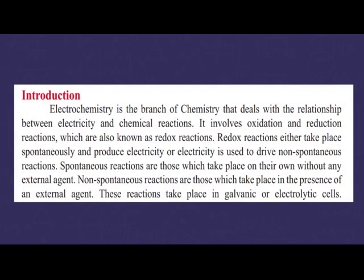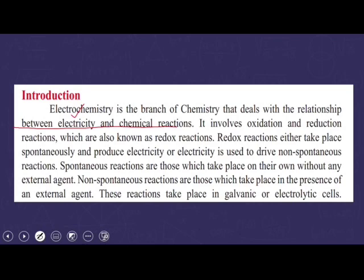Starting from the chapter's introduction: Electrochemistry is a branch of chemistry that deals with the relationship between electricity and chemical reactions. In the complete chapter, we will discuss different types of chemical reactions that produce electricity, and many chemical reactions that are driven by using electricity. This chapter is basically related to electricity and chemical reactions, and it will involve the basic concept of oxidation and reduction reactions — together we call these redox reactions.